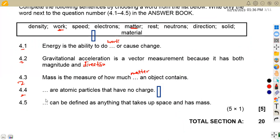On 4.4, we are given atomic particles that have no charge. Remember I talked about this - if there is no charge, we are talking of neutrons. Then on 4.5, can be defined as anything that takes up space and has got mass. What is it? It's matter again. Matter is anything that occupies space or has got mass.